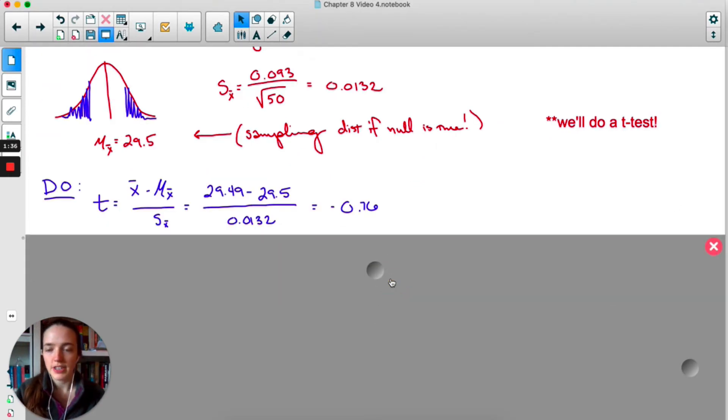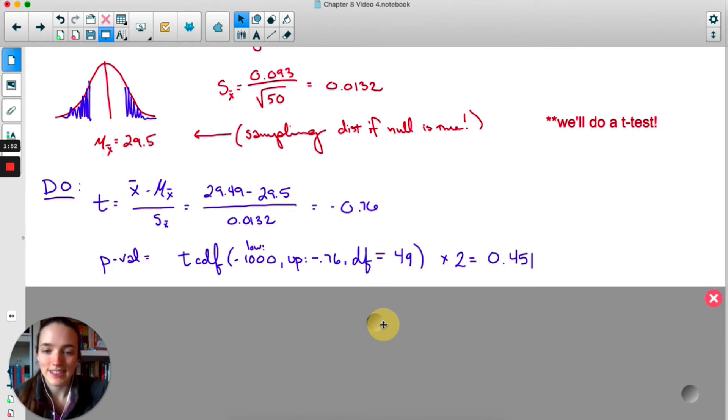So now in the do step, I'm calculating t, that's my statistic minus the mean over the standard deviation, I get negative 0.76. And because our alternate was not equal to, I'm interested in both tails. This is a two-sided test.